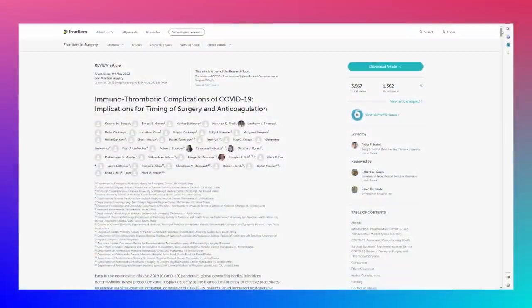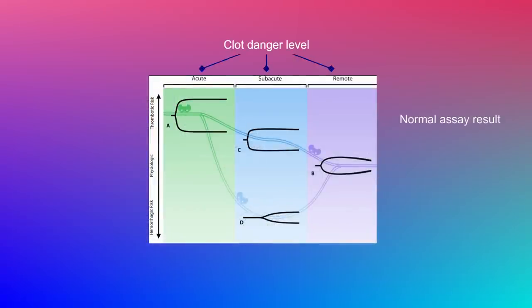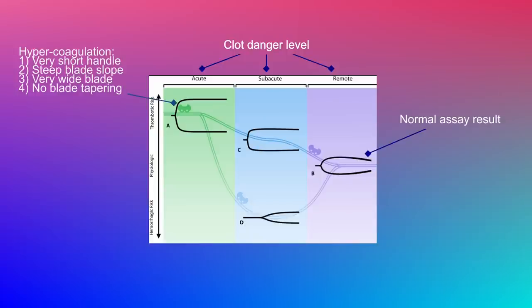The other extreme — not forming clots — would look like: the handle is very long, the blade forms very gradually (more like a canoe paddle), the size of the blade is very small and narrow, and it tapers off at the end. What's unusual is that long COVID or acute COVID patients can swing between these two extremes, with the difference that the clot state would show no tapering off of the shovel blade.